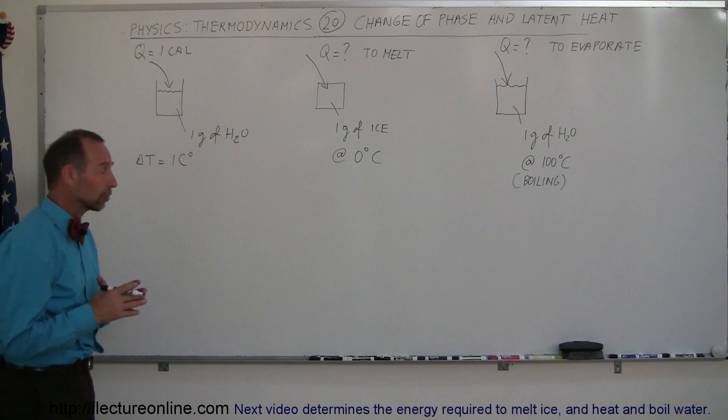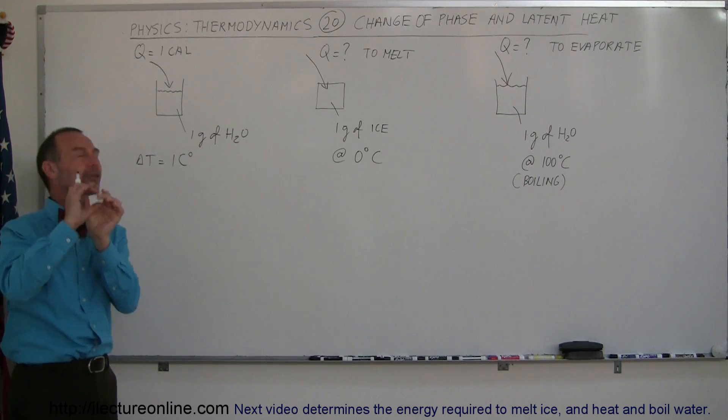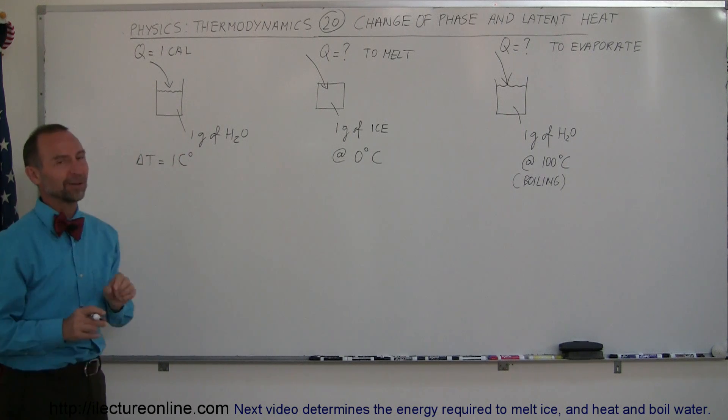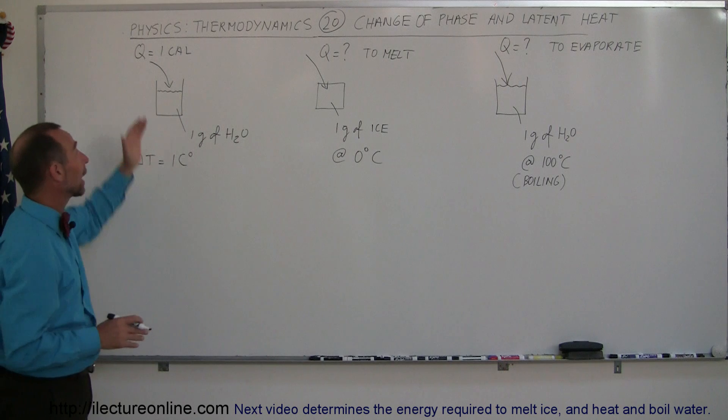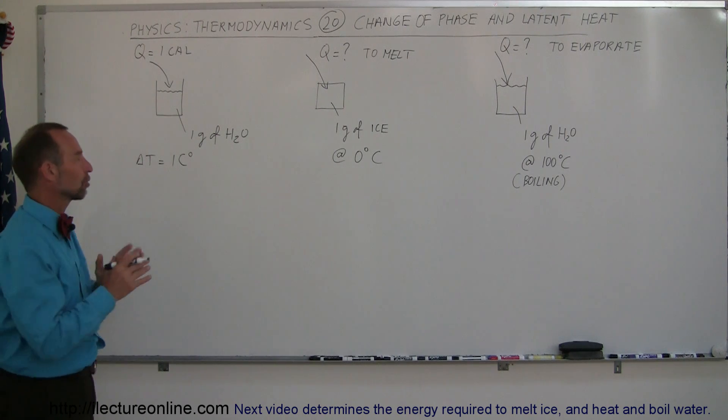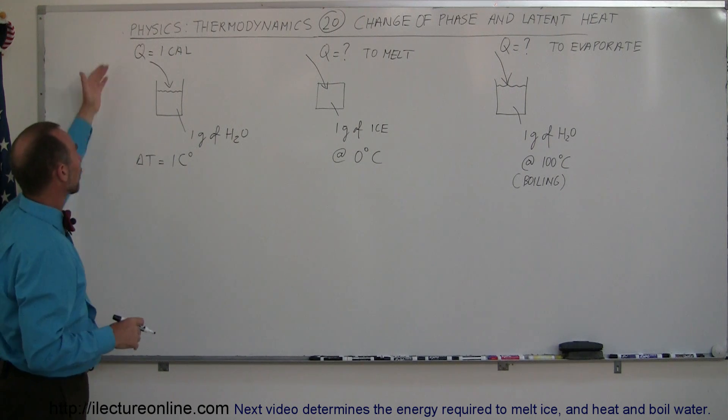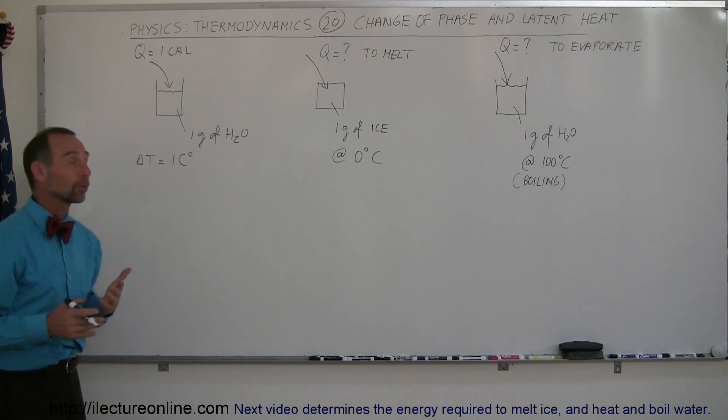So we go back to something we're familiar with. Let's say we have a little container with one gram of water. We add one calorie of heat to that container. The container is isolated from the water with some insulator. We add one calorie to the water and expect the temperature increase to be one centigrade degree.